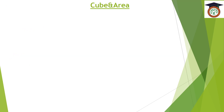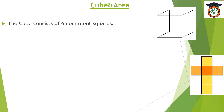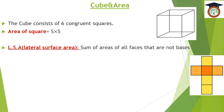After that, we are going to talk about the cube and its area. This is the shape of the cube. The cube consists of six congruent squares. We should remember that the area of the square equals the side length times the side length. Then we move to the lateral surface area, or LSA, which is the sum of areas of all faces that are not bases.